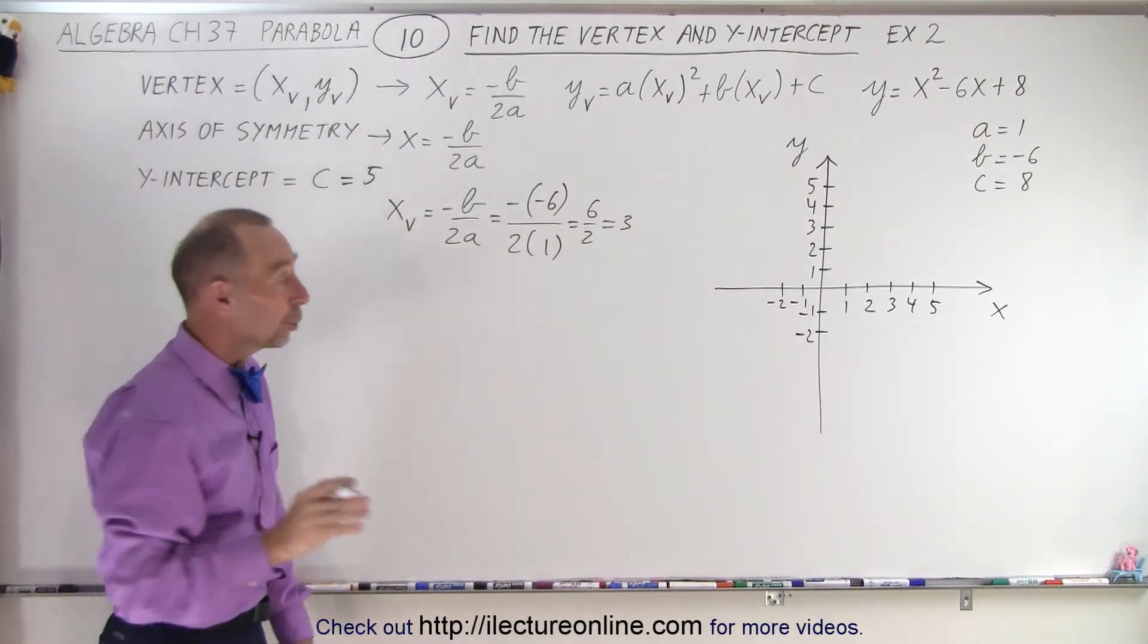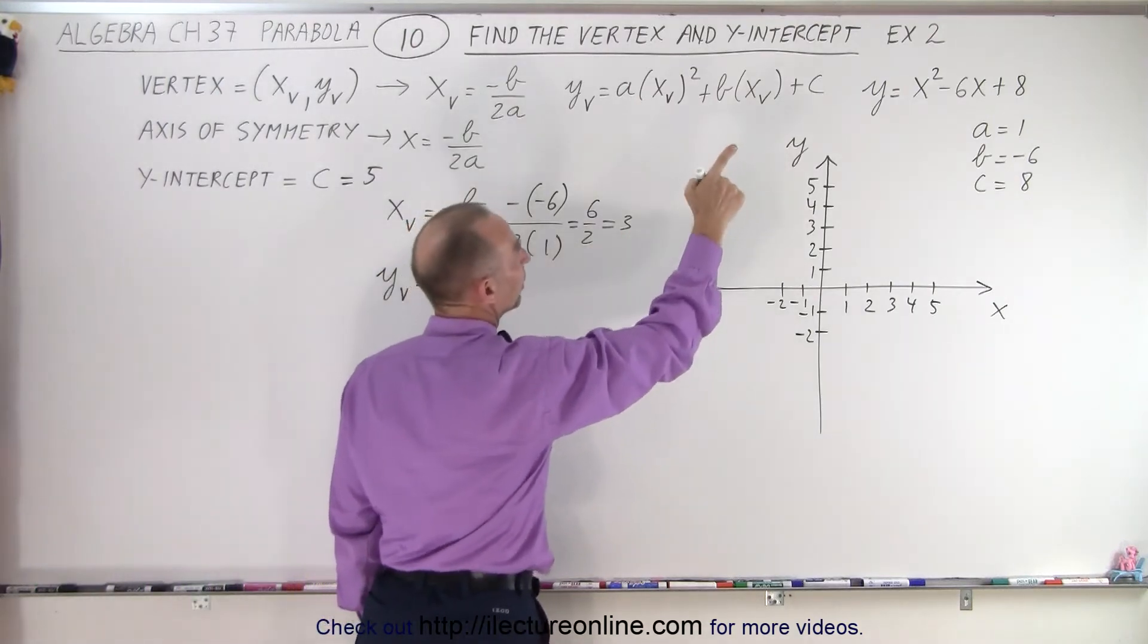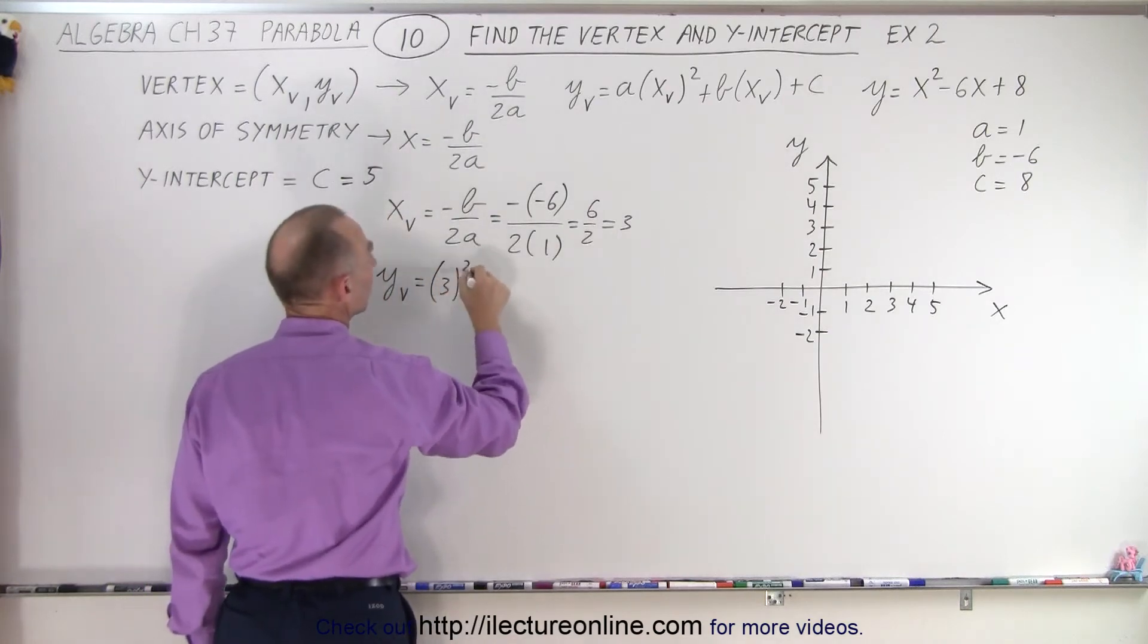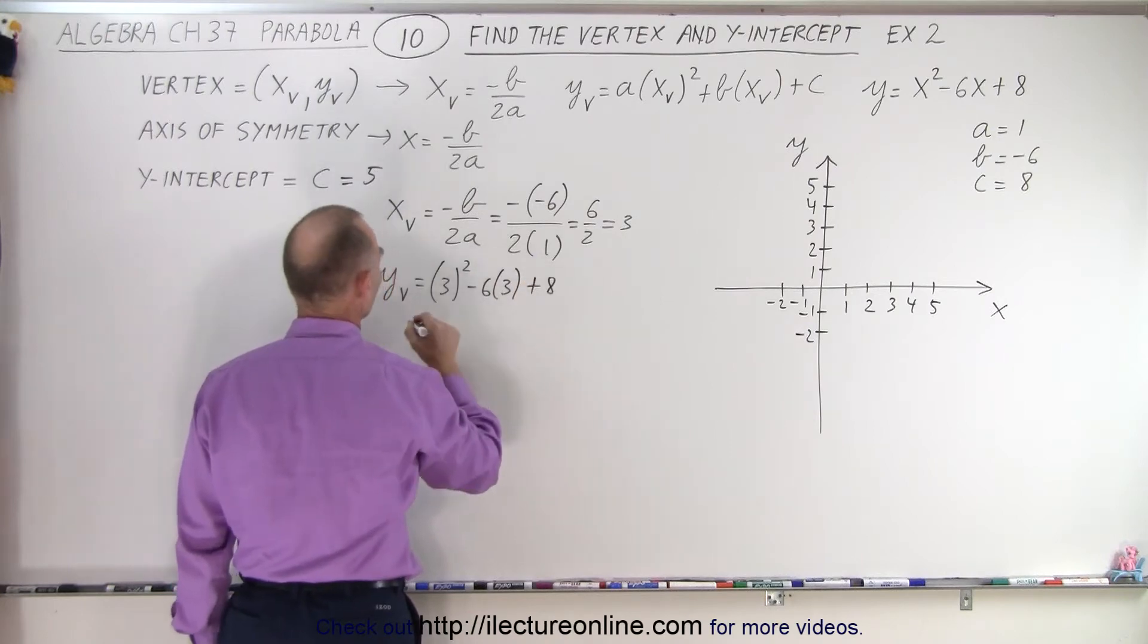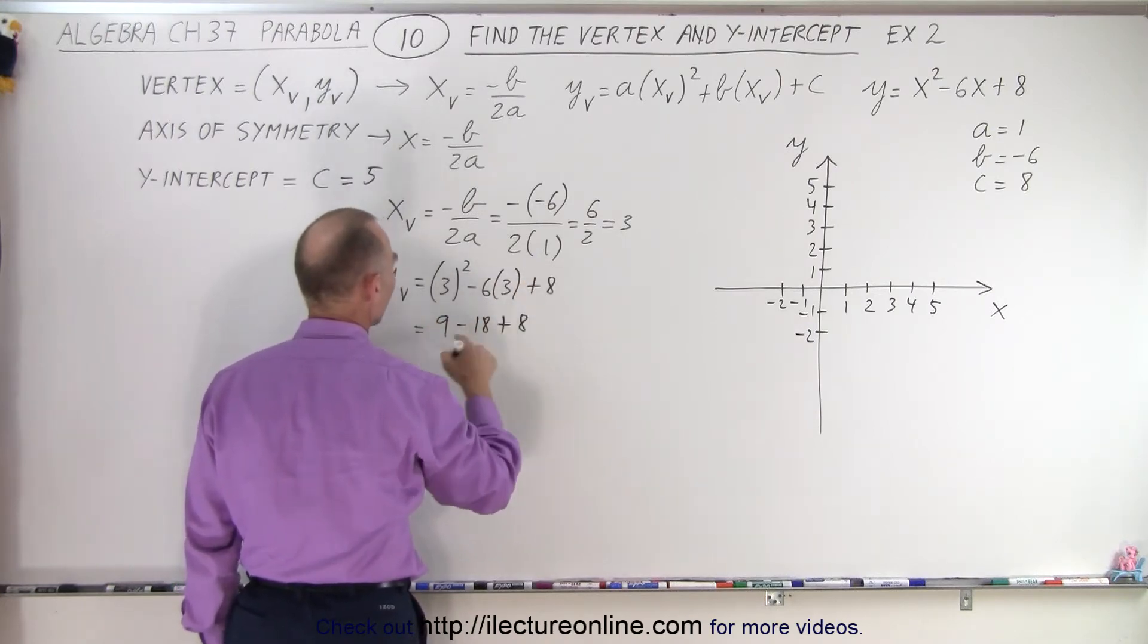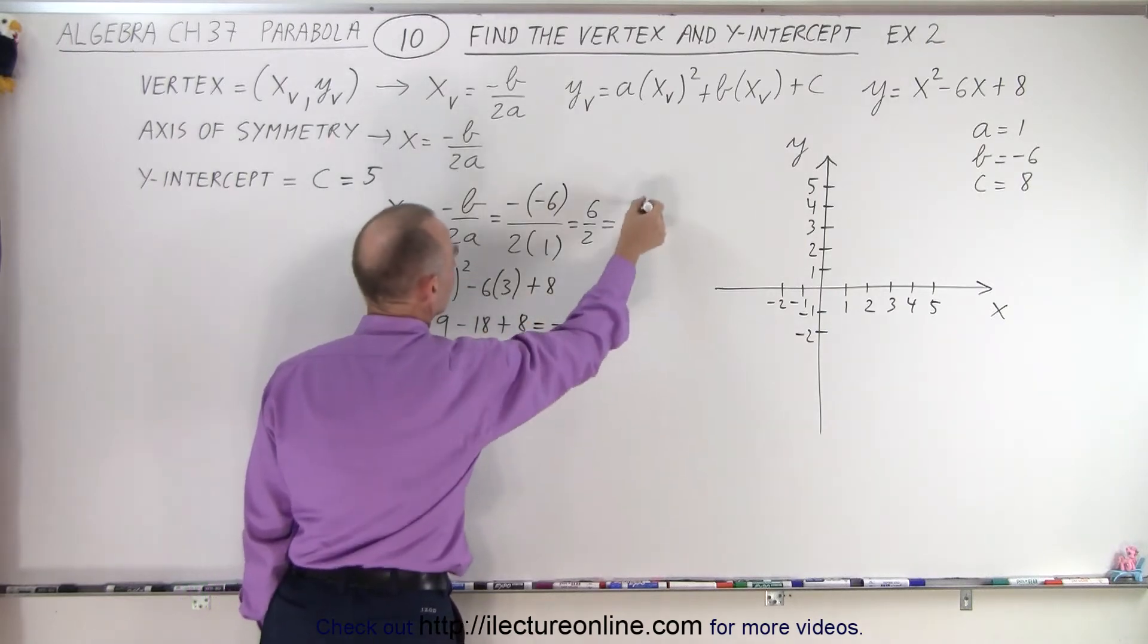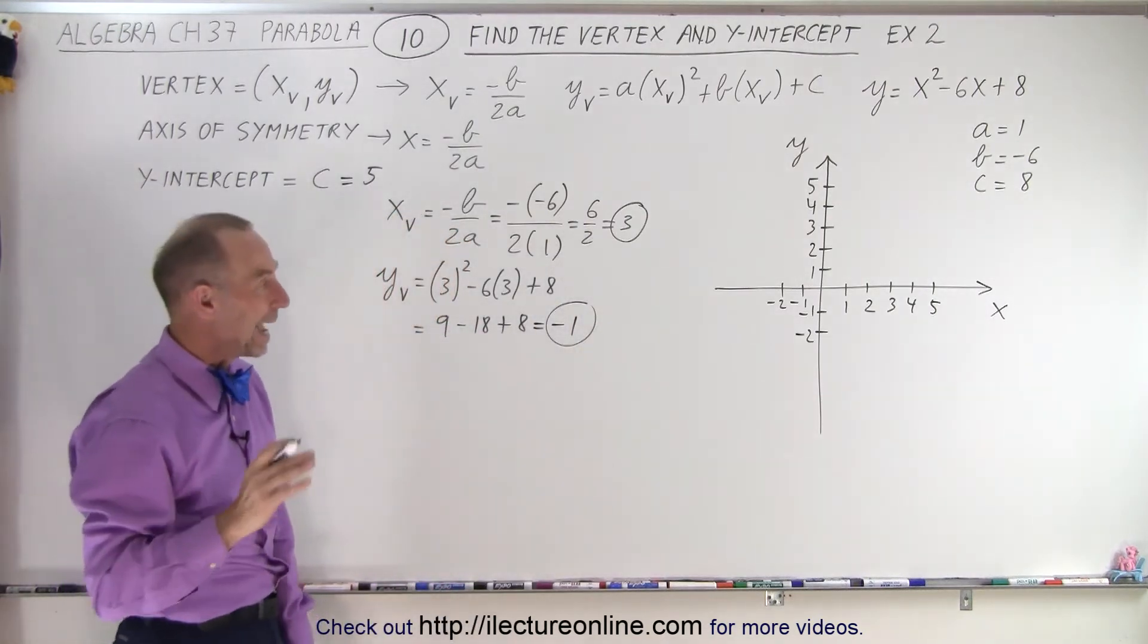Now let's find the y-coordinate. We can find the y-coordinate of the vertex by simply taking the x-value and plugging it back in the original equation. So that's going to be 3 squared minus 6 times 3 plus 8. So this is equal to 9 minus 18 plus 8. That's 17 minus 18, which is equal to minus 1. So this is the x-coordinate and the y-coordinate of the vertex, 3 and negative 1.